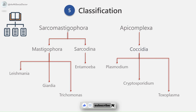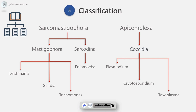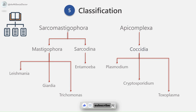Phylum Sarcomastigophora has been subdivided into two subphyla based on modes of locomotion. Mastigophora, derived from 'mastix' meaning whip or flagellum, includes protozoa which possess whip-like flagella — e.g., Trypanosoma and Trichomonas. Sarcodina, from 'sarcos' meaning flesh or body, includes parasites with no permanent locomotory organs but which move with temporary prolongations called pseudopodia — e.g., amoeba.